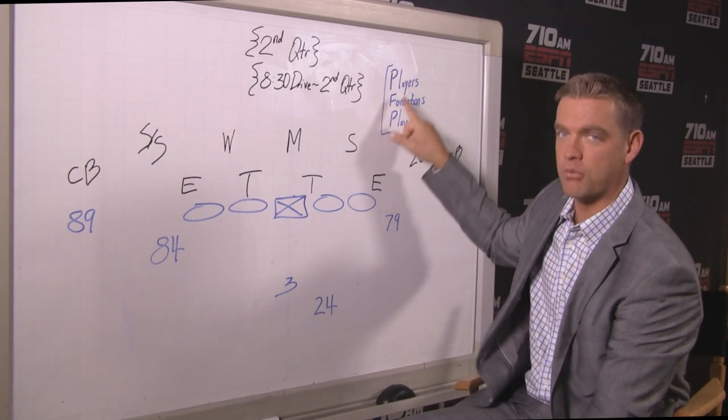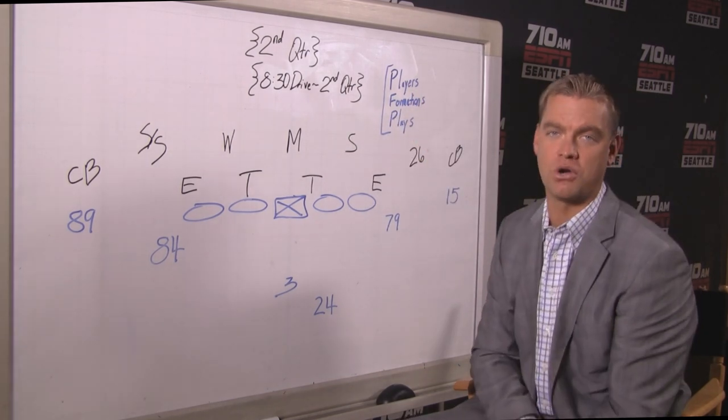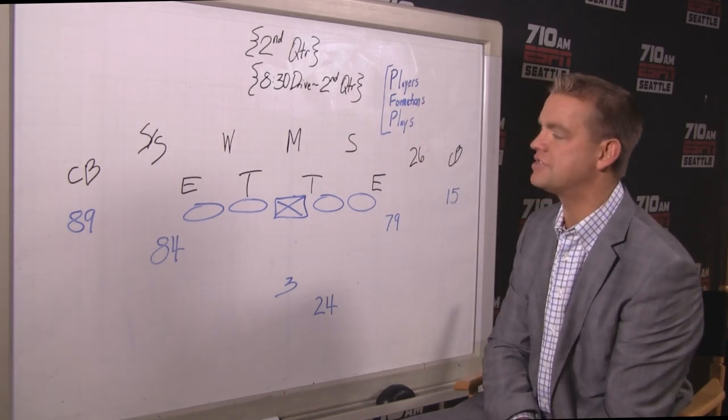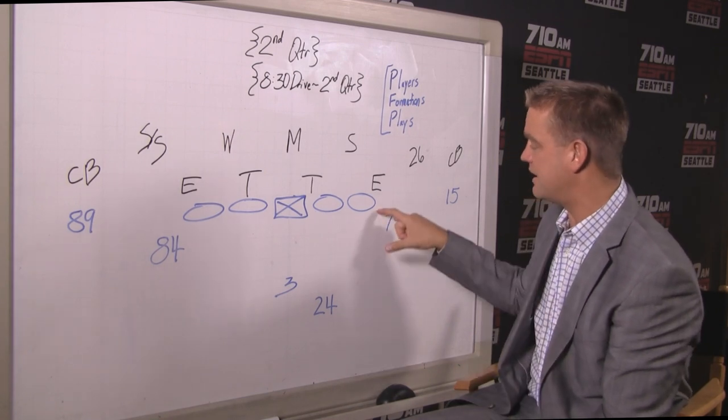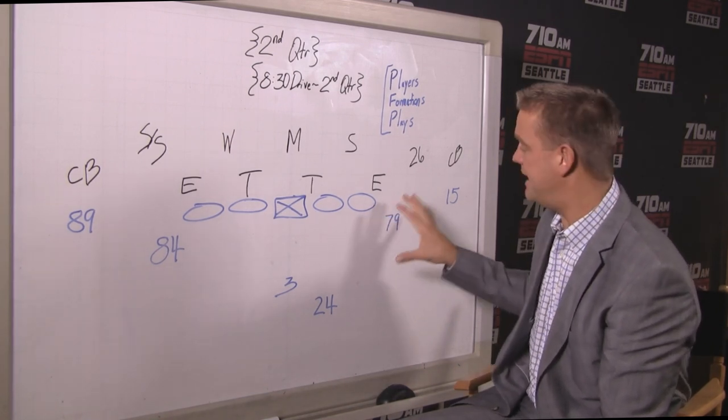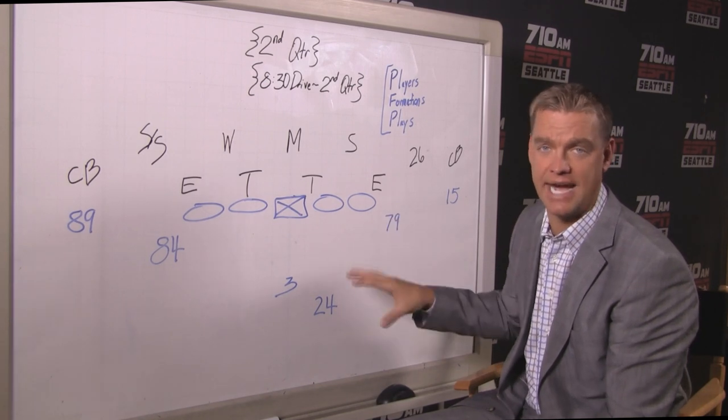I'm not going to back away from Players Formations Plays—we'll call it PFP. In this case, the player to highlight is Gary Gilliam, who's come in as their second tight end, their blocking tight end, with the loss of Luke Wilson.